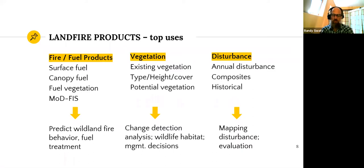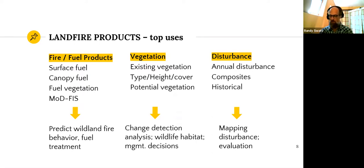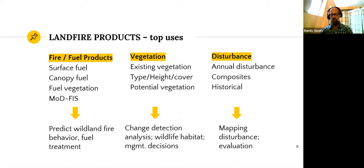LANDFIRE delivers dozens of data sets. I've categorized them as fire and fuel, vegetation, and disturbance — though this is not all of them. Under fire and fuel products, we deliver surface fuel and canopy fuel data, used to predict wildland fire behavior and help prioritize fuel treatments for restoration, protecting the wildland-urban interface, and other values at risk. We also deliver an existing vegetation type dataset, and we map height and cover. We have biophysical settings and environmental site potential for characterizing potential vegetation, used in change detection, wildlife habitat modeling, and management decisions. We also deliver annual disturbance data going back to 1999.